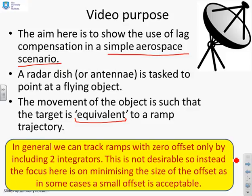In general, when we look at offsets, if we want to track ramps with zero offset, we need two integrators. And what you will have understood from your control analysis is that we really don't want to include two integrators unless absolutely necessary.